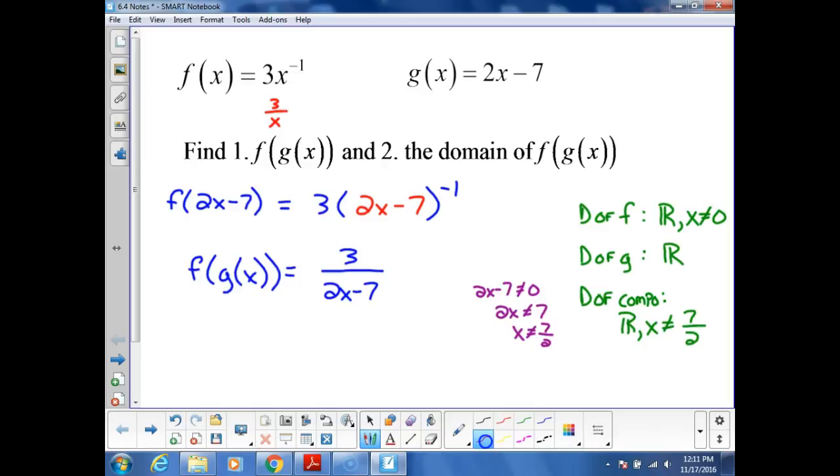So what is my final domain, then, of f of g of x? Do we agree with that? All real numbers except x cannot equal 0 or negative or positive 7 halves. Do we agree with that? I don't. Oops, I'm standing right at the microphone. That's probably why people can't hear me. Sorry about that. They said it was all real numbers except 0 and 7 halves.